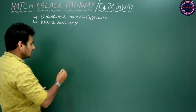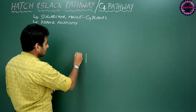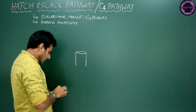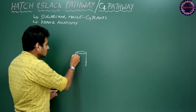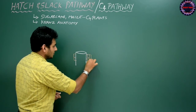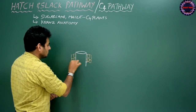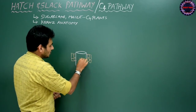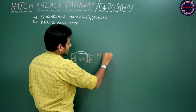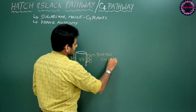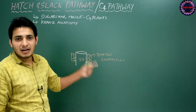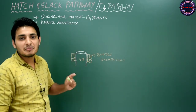The anatomy is as follows: if this is the vascular bundle — that is xylem and phloem — around them some cells will be there, either single-layered or multi-layered. These cells surrounding the vascular bundle are called bundle sheath cells. You see bundle sheath cells only in C4 plants like sugarcane and maize; you do not see them in C3 plants.